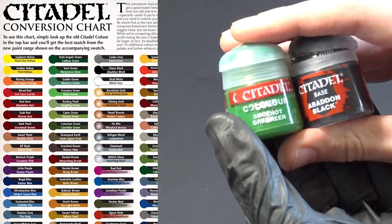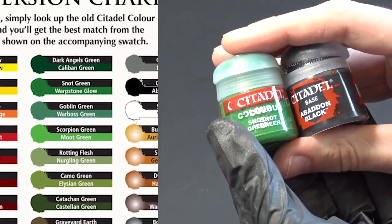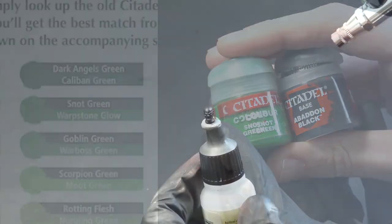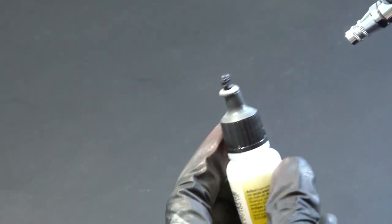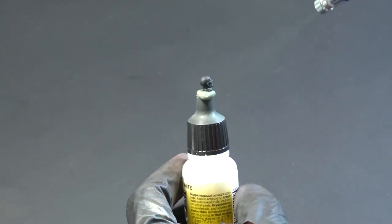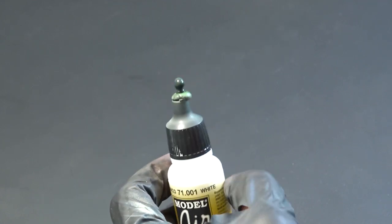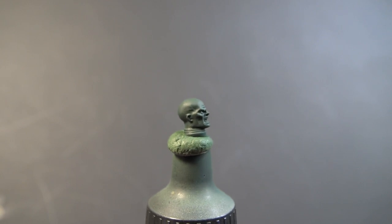For the first layer I'm using a one-to-one mix of snot green and abaddon black. You can just spray this layer all over the head like a base coat. This is how the head looks after the first layer is sprayed.